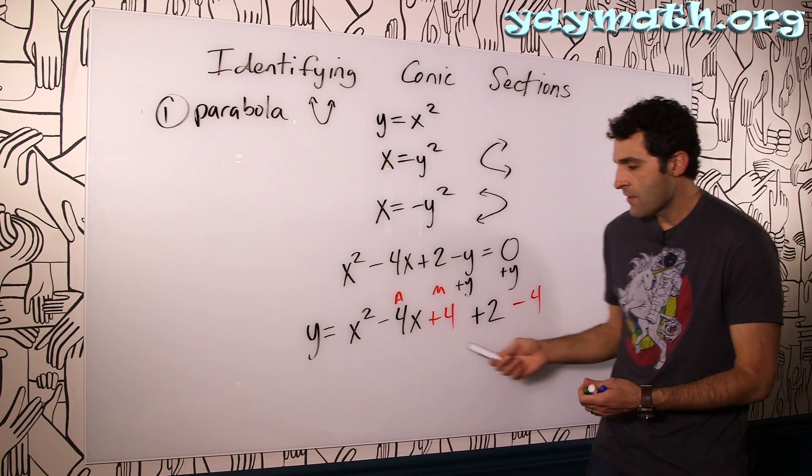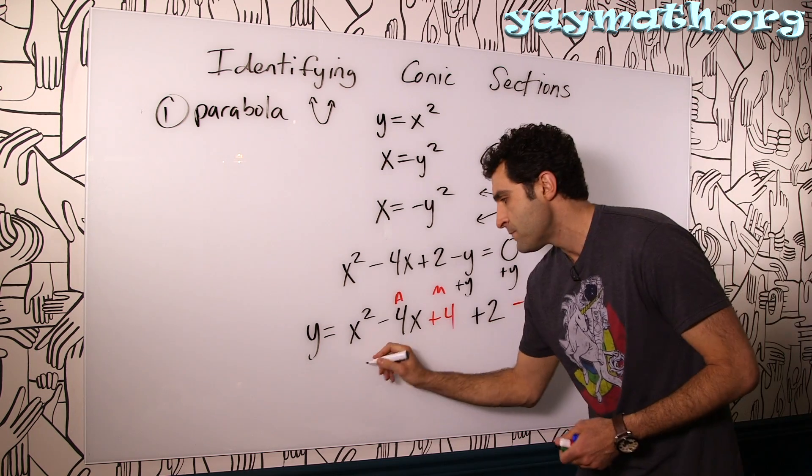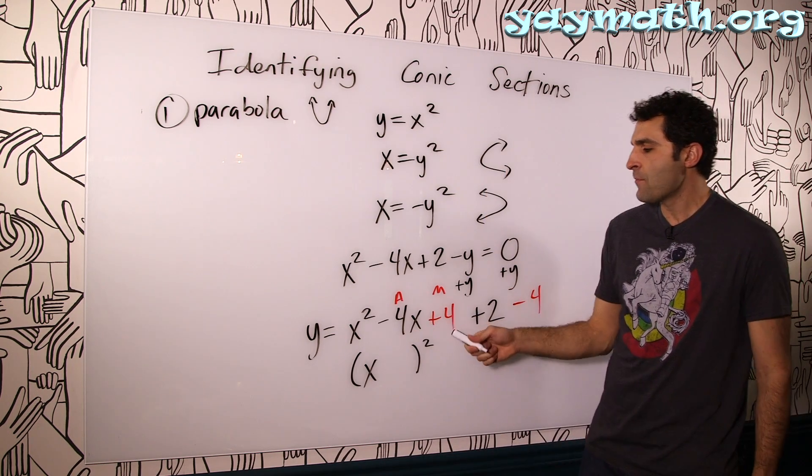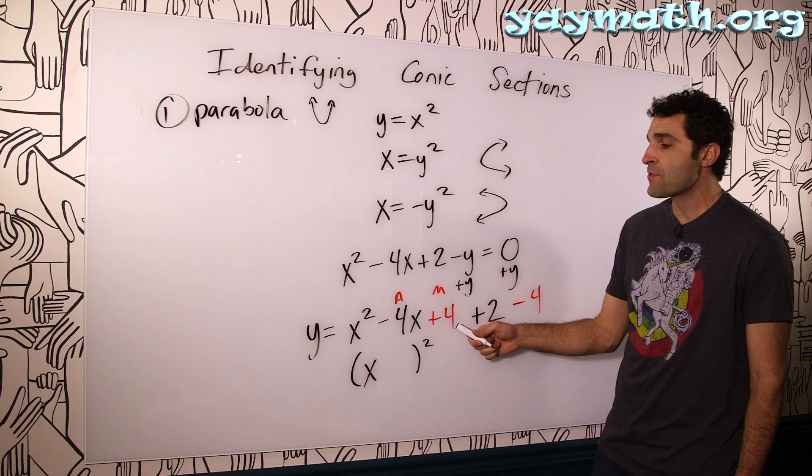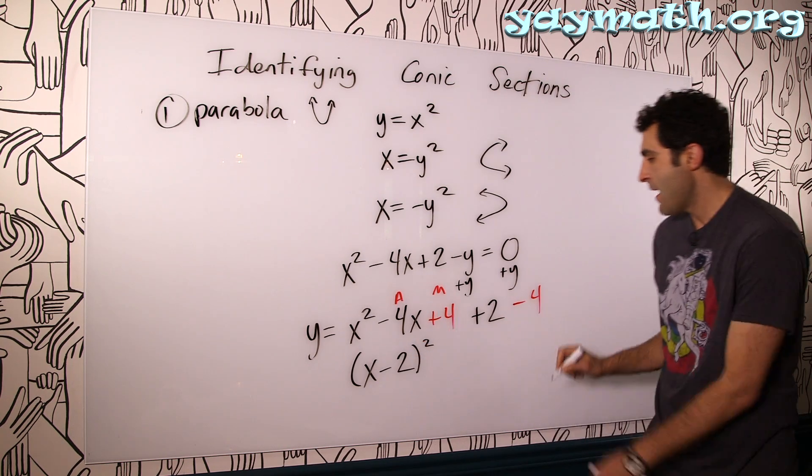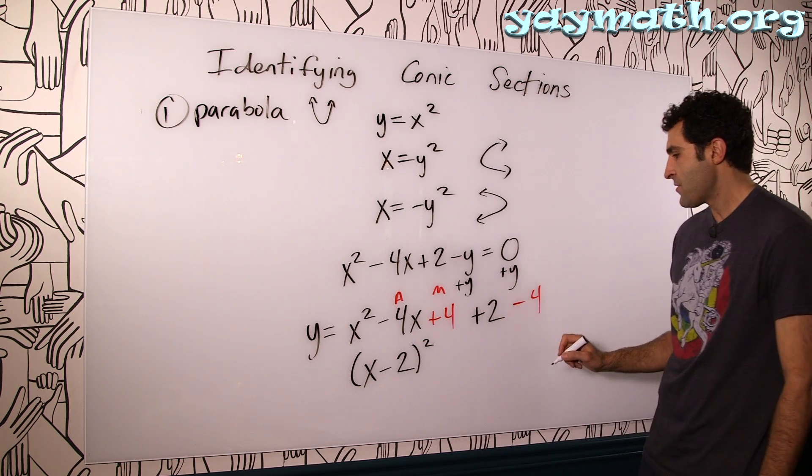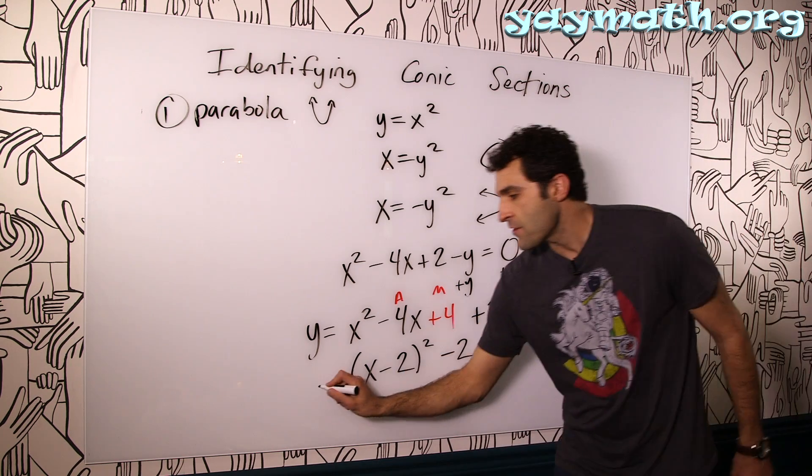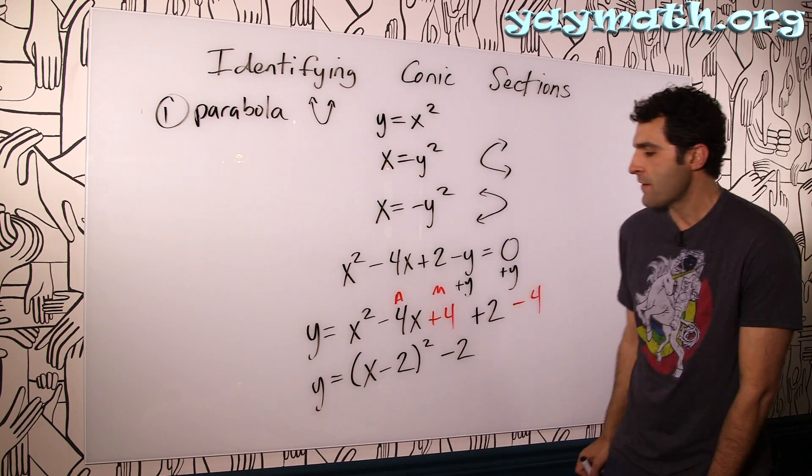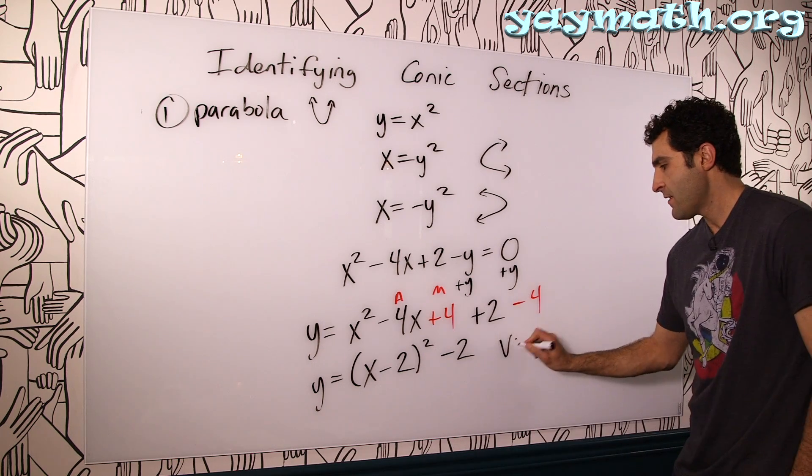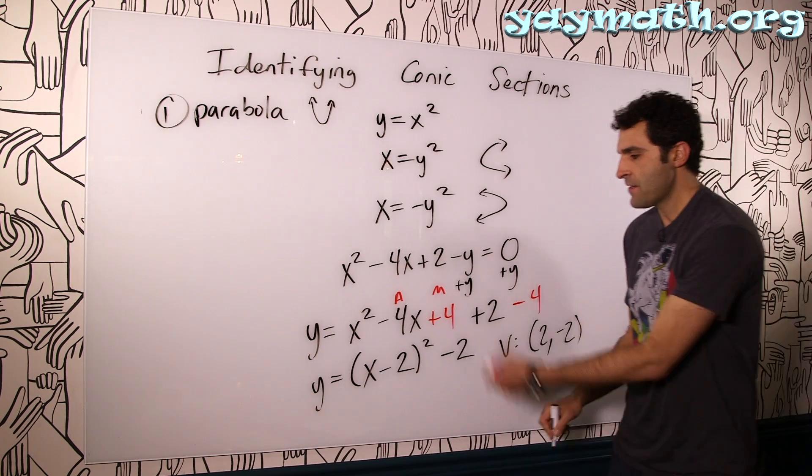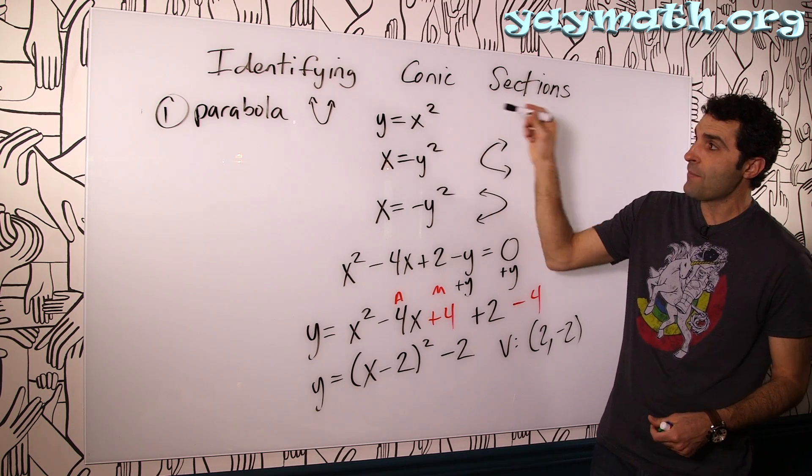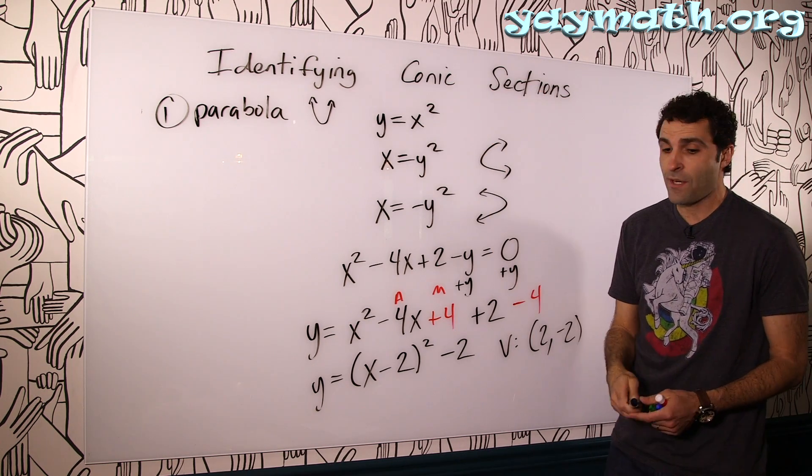So let's go ahead and do this. This now factors to, what two numbers add to make negative four and multiply to positive four? Those numbers were negative two and negative two. There they are. And then this happens to add up to negative two as well. And so here's your equation in standard form. This vertex is at two negative two and this parabola faces up. That's the first one. It's a parabola when only one of them is squared, one of the variables.